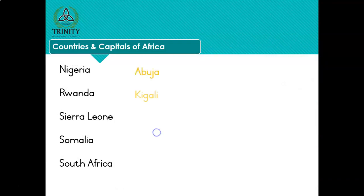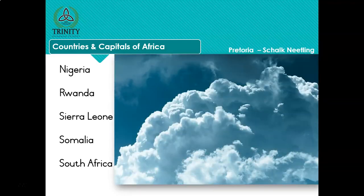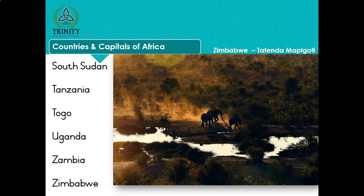Nigeria - Abuja. Rwanda - Kigali. Sierra Leone - Freetown. Somalia - Mogadishu. South Africa - and I can hear you all at home saying Bloemfontein, Cape Town and Pretoria. Here is a photo of Pretoria - these are the kinds of clouds you find there. Pretoria is known for its wonderful electric highveld storms. South Sudan - Juba. Tanzania - Dodoma. Togo - Lomé. Uganda - Kampala. Zambia - Lusaka. Zimbabwe - Harare. And there's a photo of Zimbabwe.